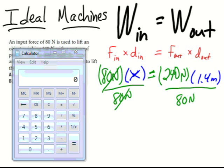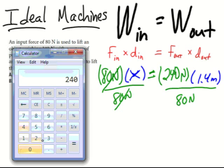Using our calculator, we'll type in 240 newtons times distance of 1.4 meters divided by 80 newtons, and we get 4.2 meters.